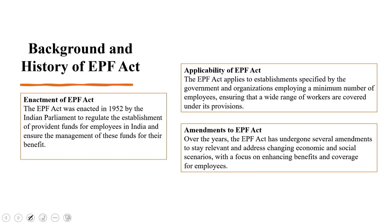Looking at the background, the EPF Act was enacted in 1952 by the Indian Parliament to regulate the establishment of provident funds for employees in India and to ensure the management of these funds for their benefit. The act establishes a comprehensive regulatory framework covering two social security schemes. One is the EPF scheme — a mandatory savings scheme compelling eligible employees and employers to contribute a designated portion of salary towards a designated account. Then there is the Employees Pension Scheme (EPS), introduced in 1995 as an amendment to the EPF Act, providing pension benefits upon retirement for qualifying employees, with contributions from both employers and employees.